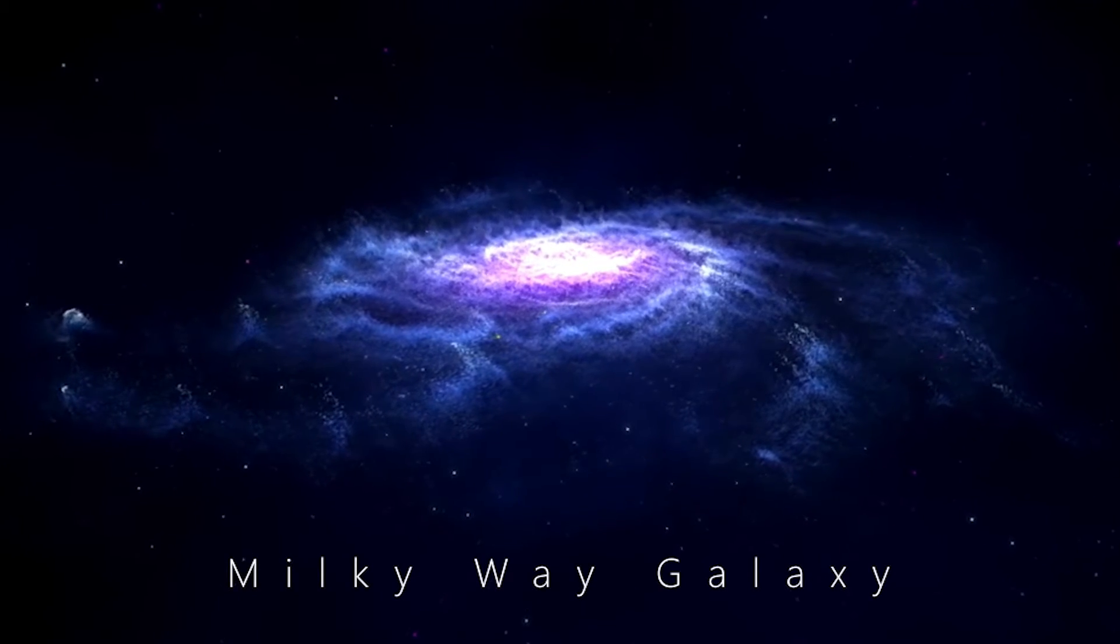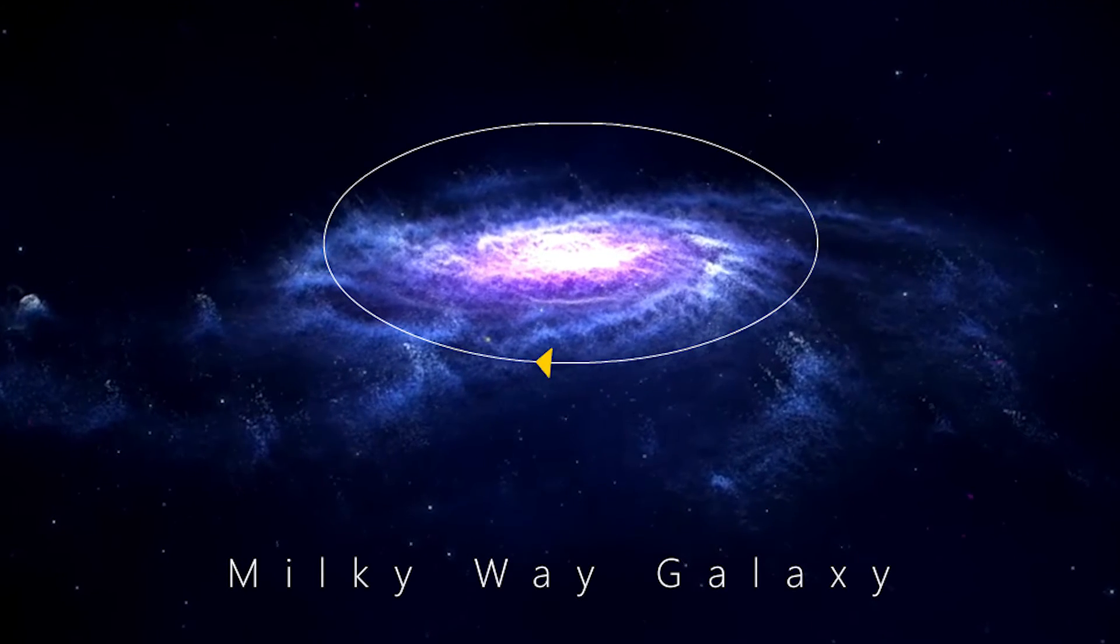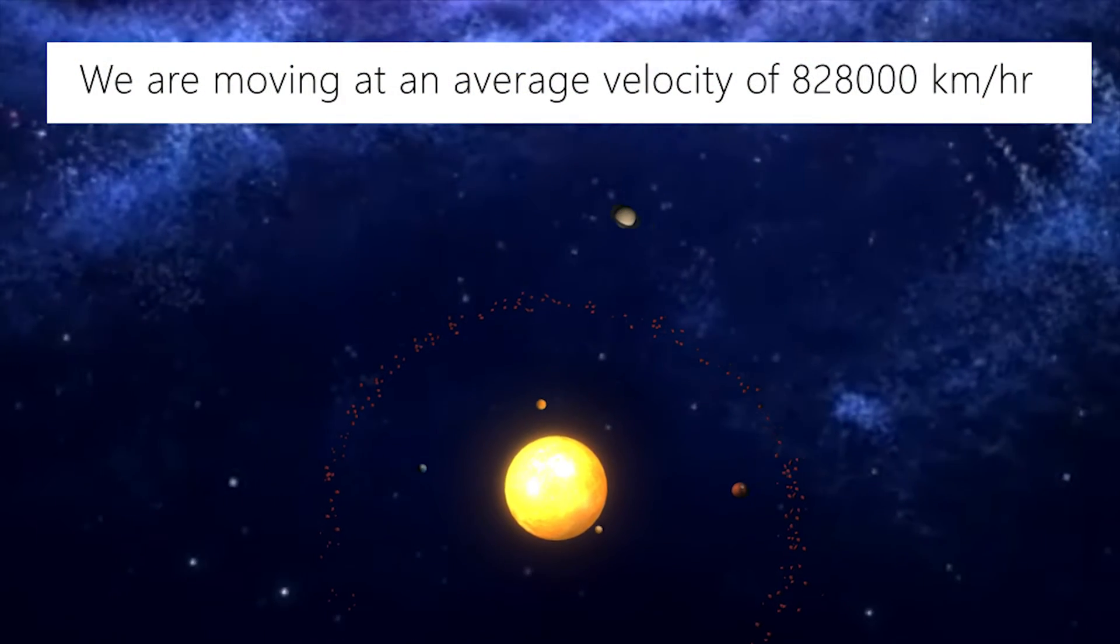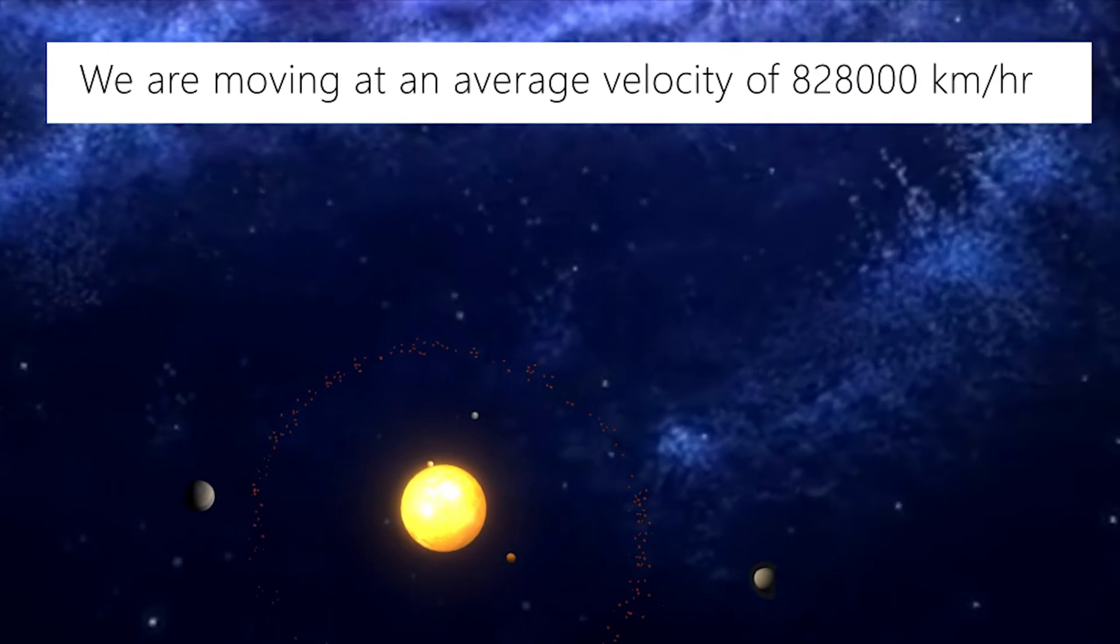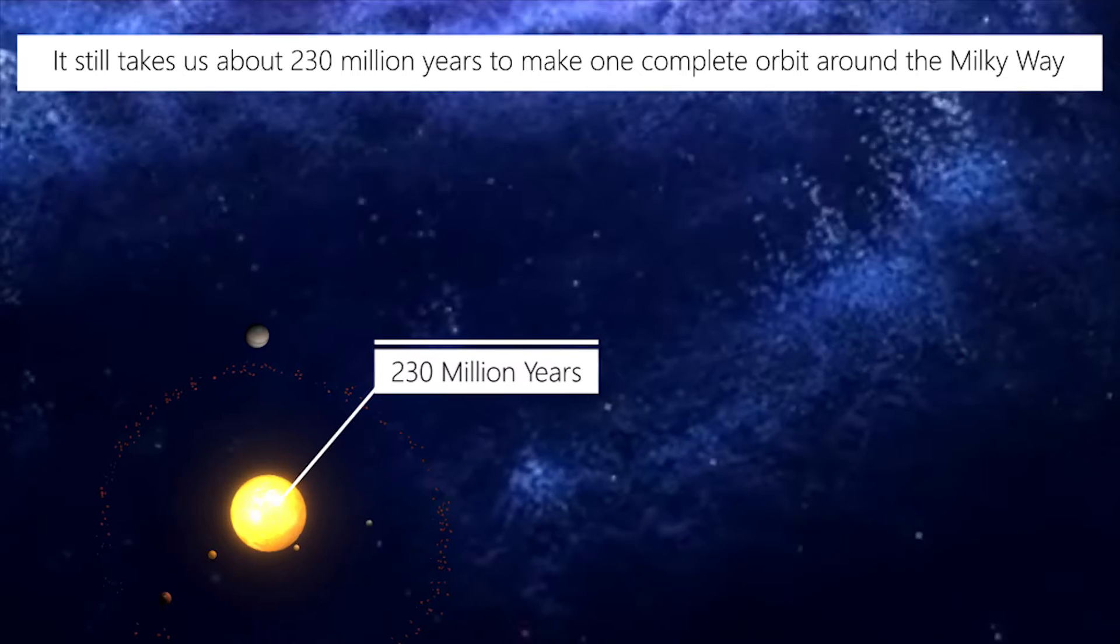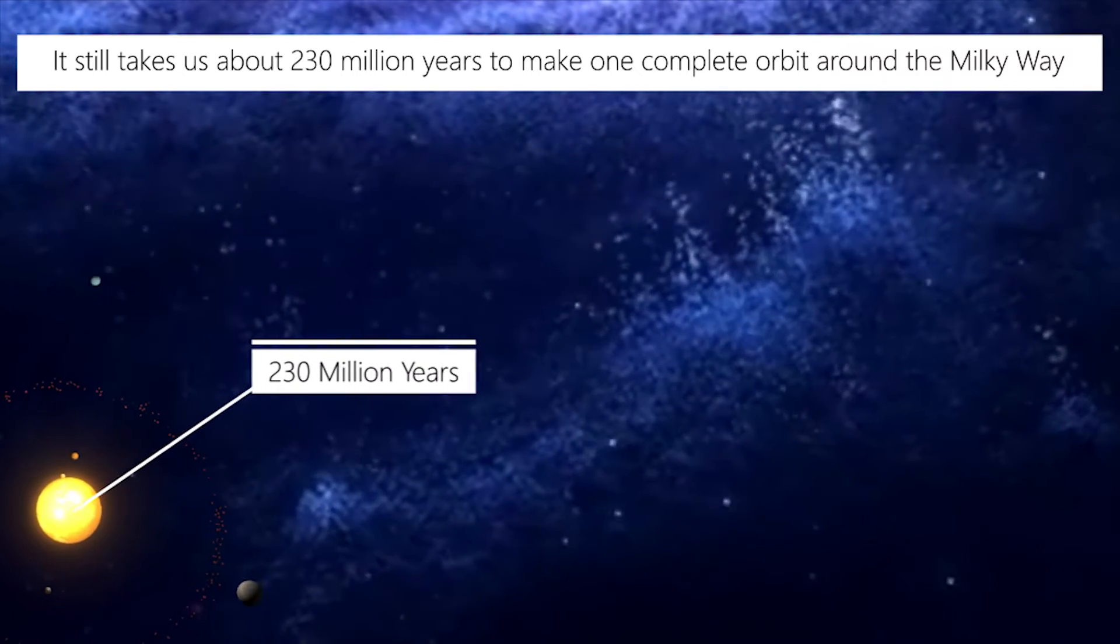Our whole solar system orbits around the center of the Milky Way Galaxy with clockwise direction. We are moving at an average velocity of 828,000 kilometers per hour. But even at that high rate, it still takes us about 230 million years to make one complete orbit around the Milky Way.